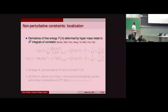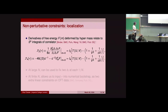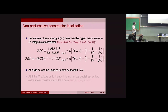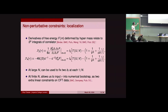The last non-perturbative constraint is supersymmetric localization. Kinematically, you can show that the sphere free energy deformed by a mass coupling to the hypermultiplet, upon taking derivatives with respect to the mass and setting mass to zero, gives an integral of the four-point function over the sphere — because the mass couples to the stress tensor multiplet, acting as a source. There are two such integrated constraints, which are exact non-perturbative equations. We can apply them at large N to fix two of those unknown coefficients b at every order in 1/N, or at finite N to add two additional linear constraints to our infinite crossing system.